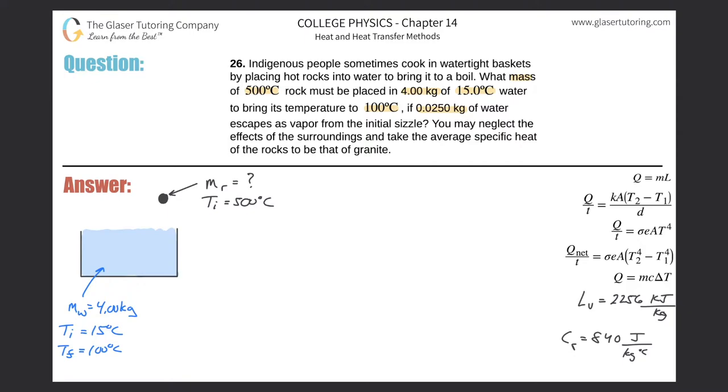We know that the heat will be lost from this object because it's hotter, and then the heat will be gained by this water because it's cooler. So I can say the heat lost by the rock, that should be negative, you've got to plug in the negative sign, will then equal the heat gained by the water. Now they added this, so that should be fairly straightforward.